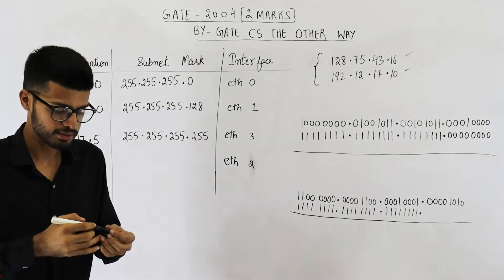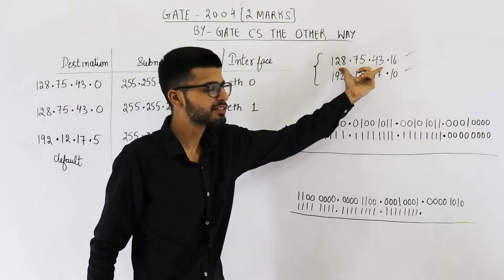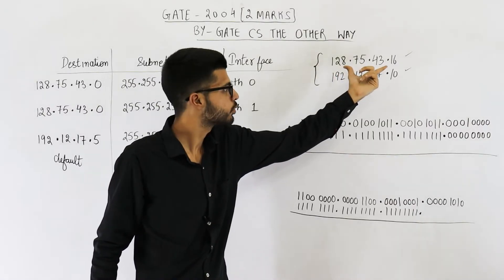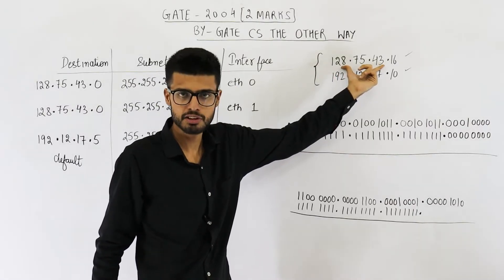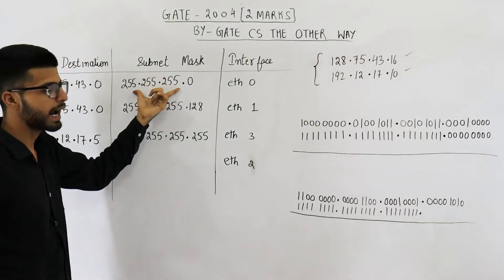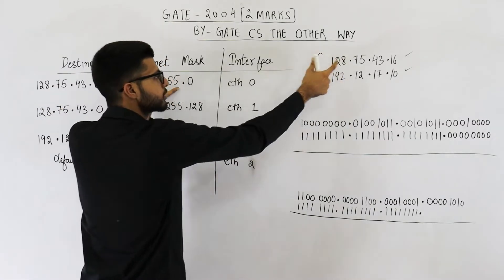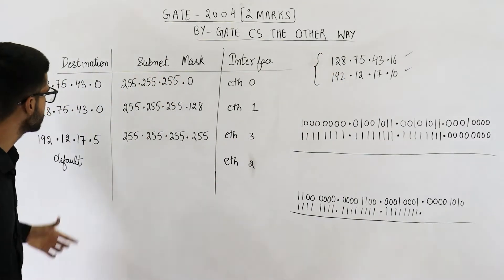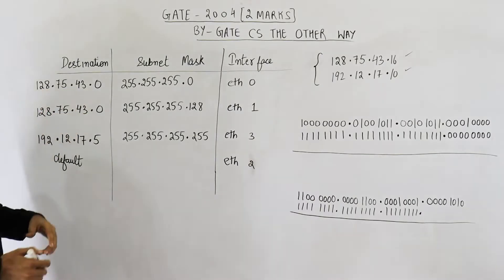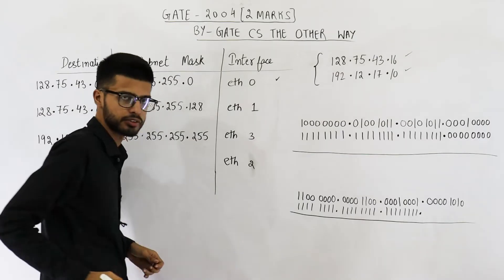Now how does a router decide where to forward a packet? It is going to analyze the destination IP addresses. It is going to take this destination IP address and the router will perform AND operation with the subnet mask. So perform AND of both of these. If the result matches with this network ID, then forward the packet to that specific interface.